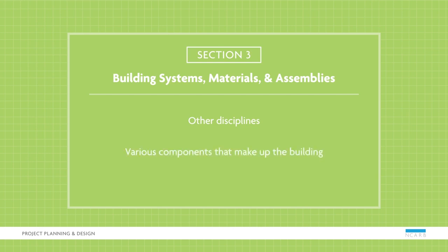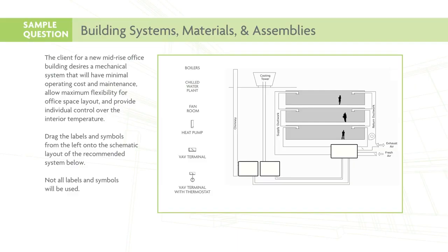Here's a sample question. The client for a new mid-rise office building desires a mechanical system that will have minimal operating cost and maintenance, allow maximum flexibility for office space layout, and provide individual control over the interior temperature. Drag the labels and symbols from the left onto the schematic layout of the recommended system below. Not all labels and symbols will be used.